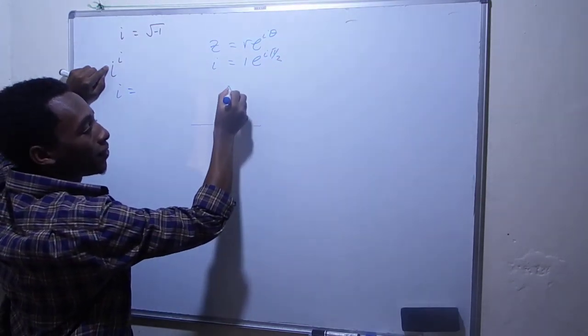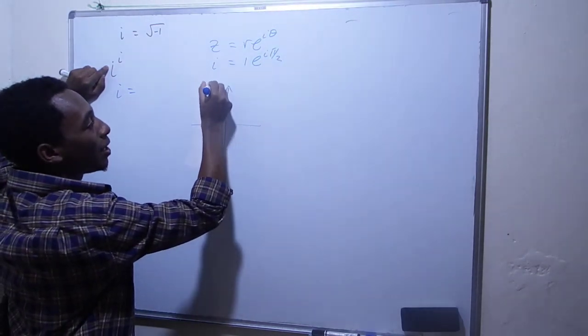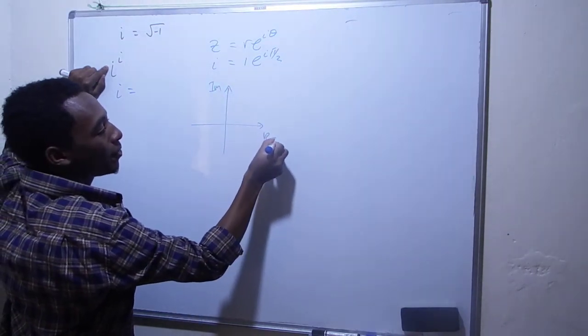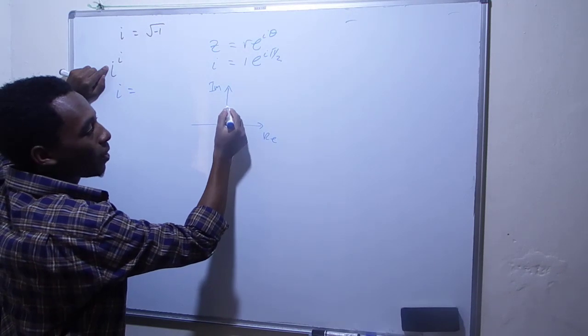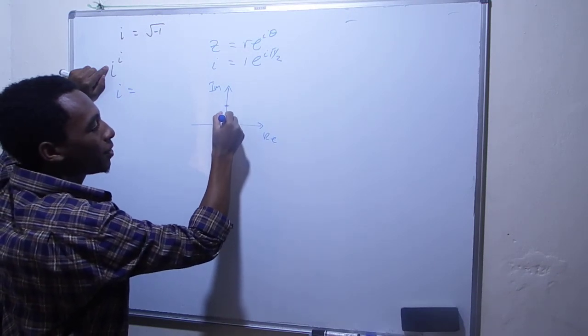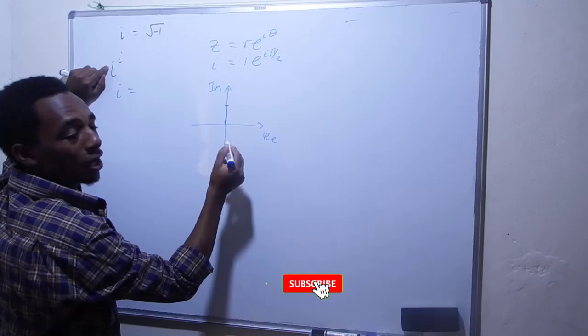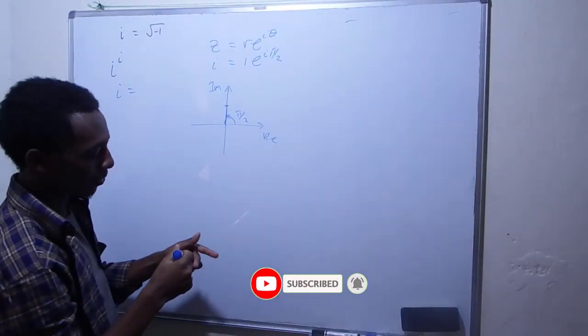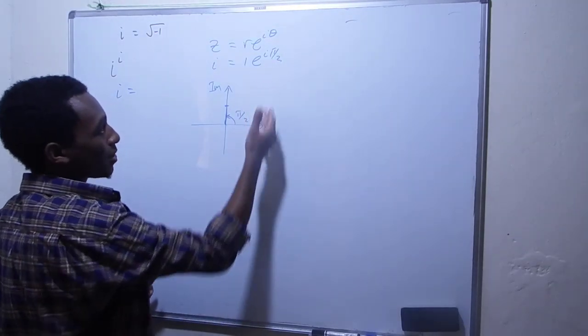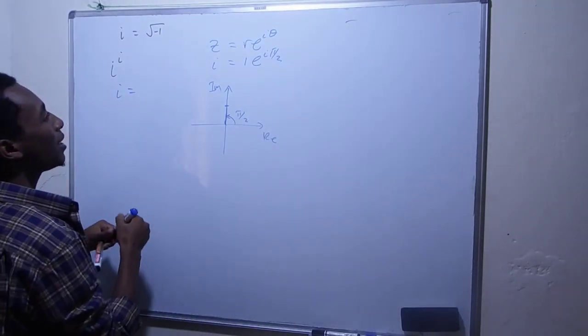If I plot this, here's the imaginary axis and the real axis. i is just one unit on the imaginary axis. That's our complex number and the argument is π/2. So that's our representation of i.